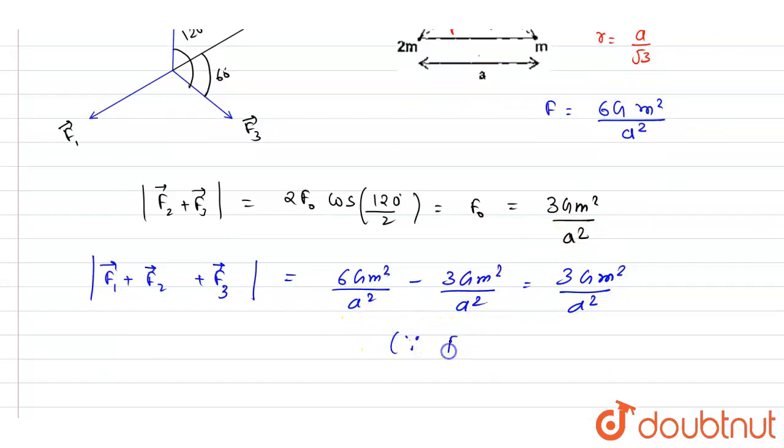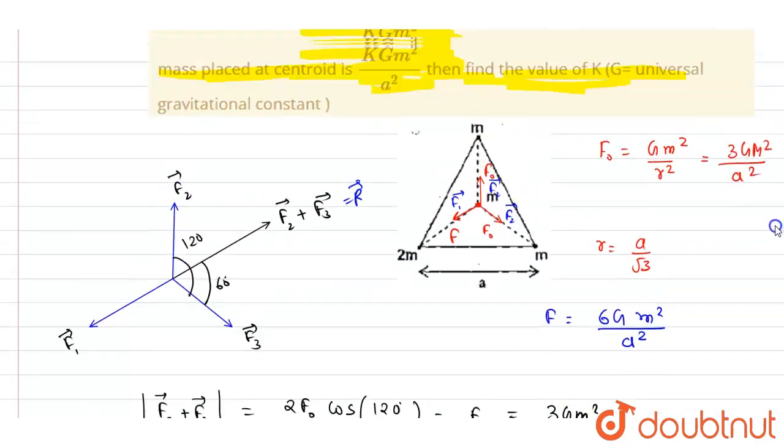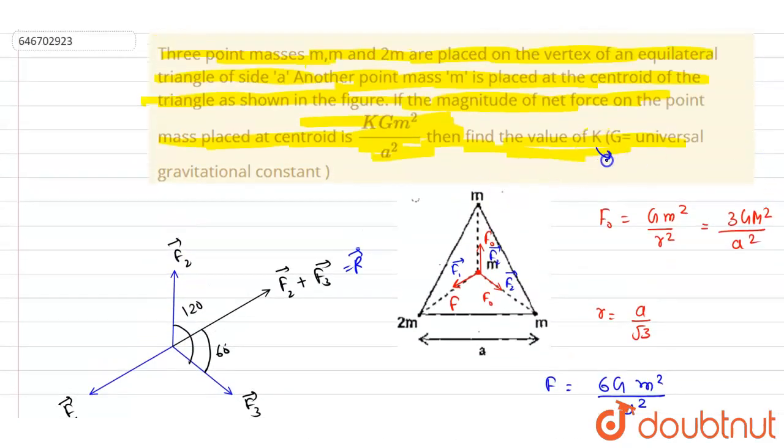So let me write down: since f1 and f2 plus f3 are antiparallel, antiparallel vectors can be directly subtracted. So k value here will be equal to 3.